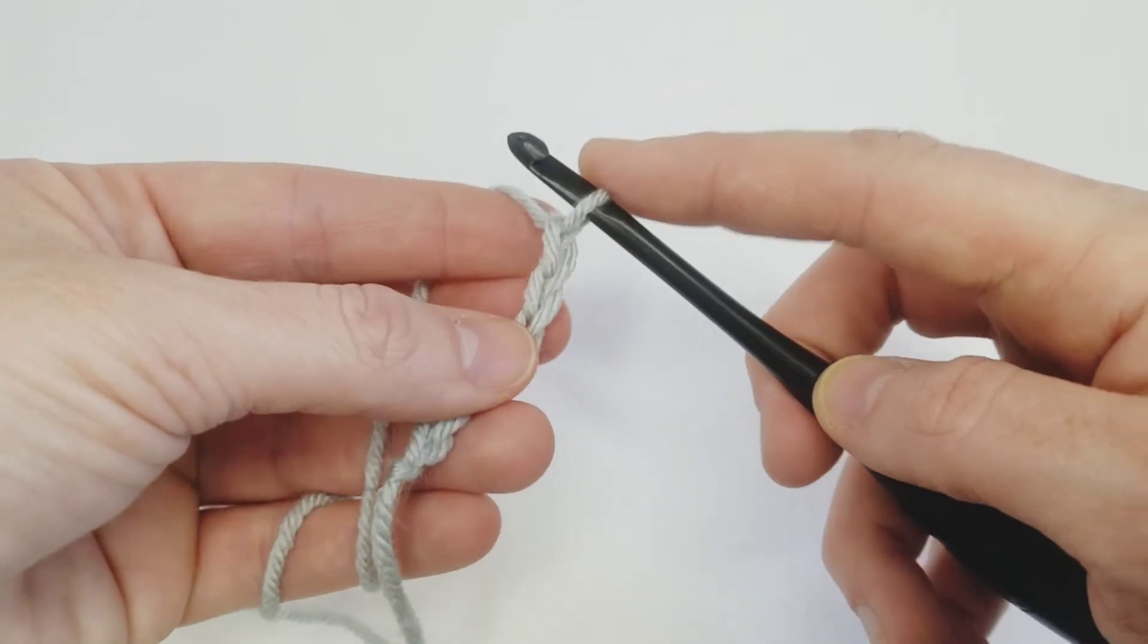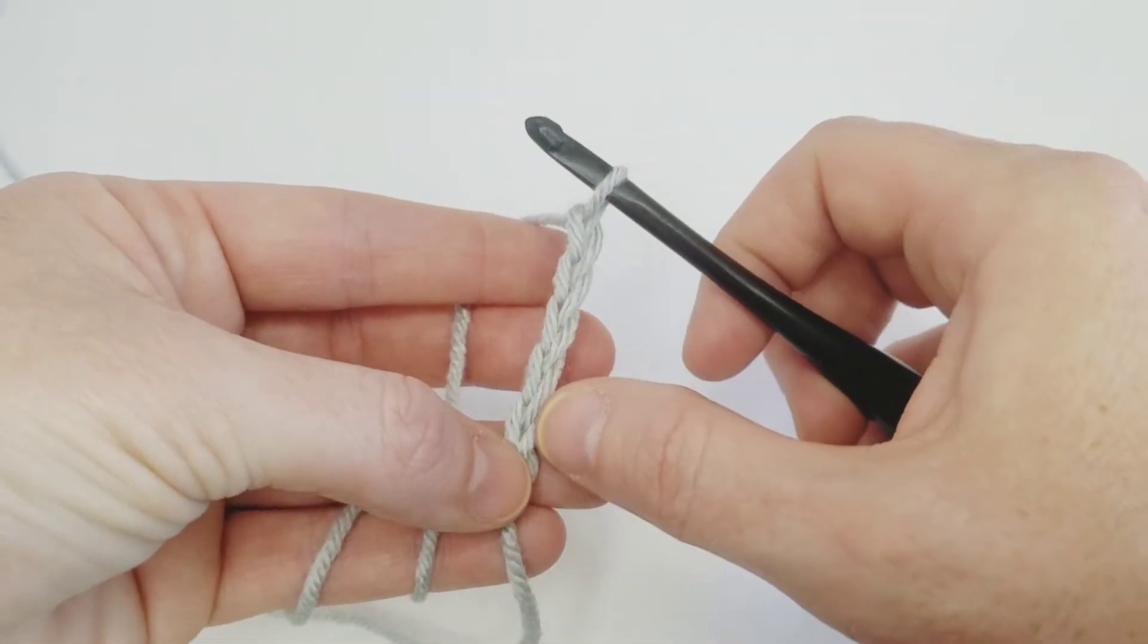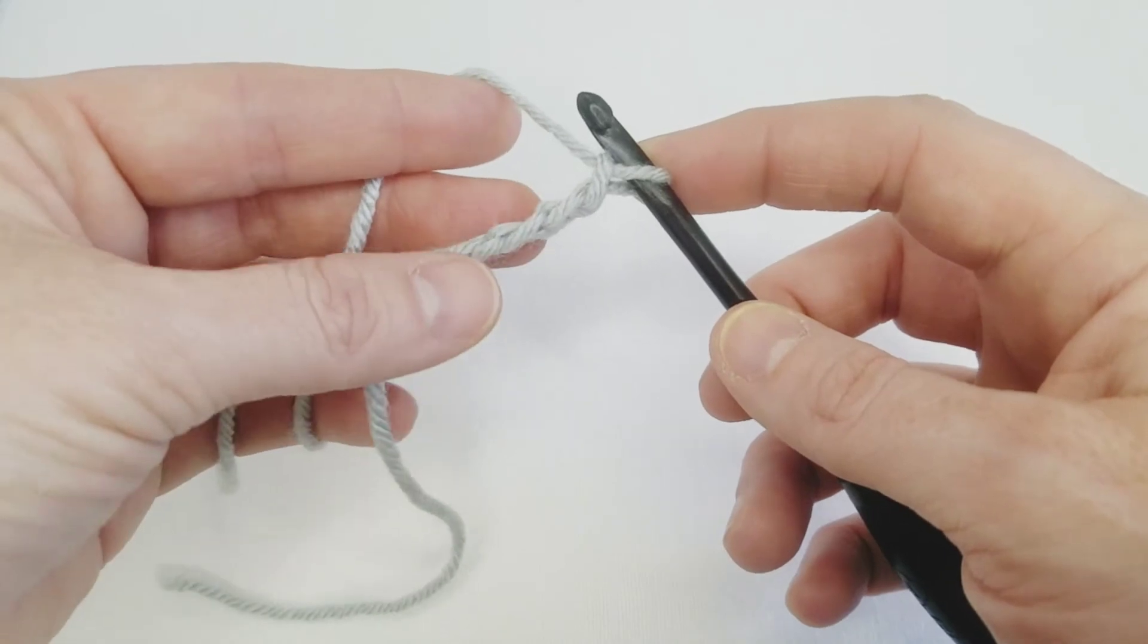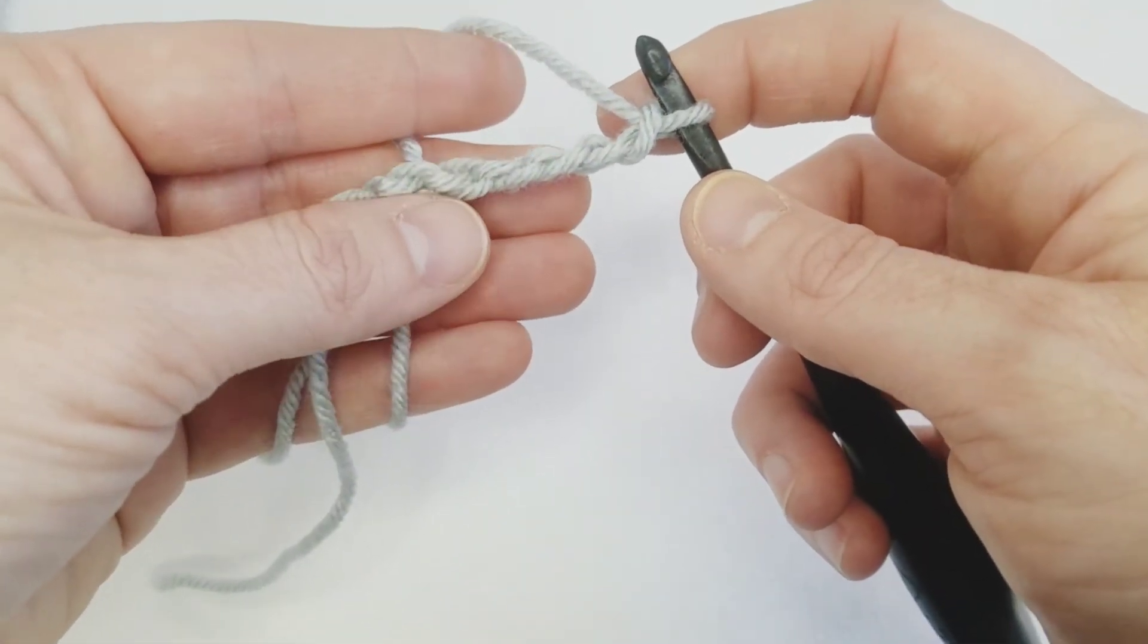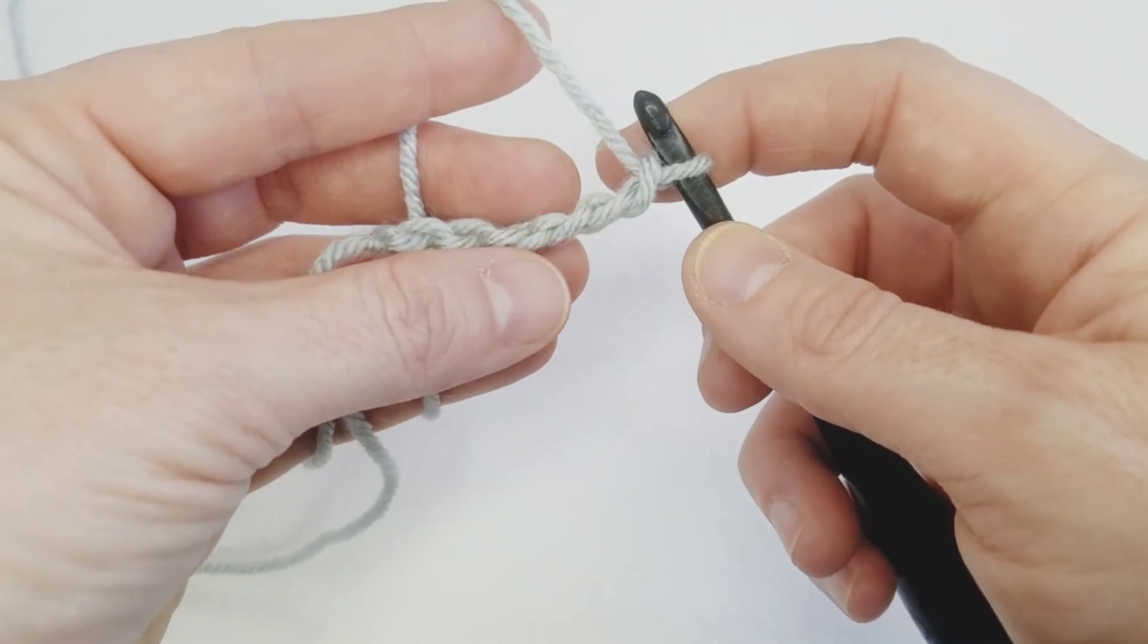All right, so you have the front part of your chain that looks like a braid, but if you flip it over you can see that the back side of your chain has these little bumps, and those are what we're going to work with to do our Tunisian crochet.